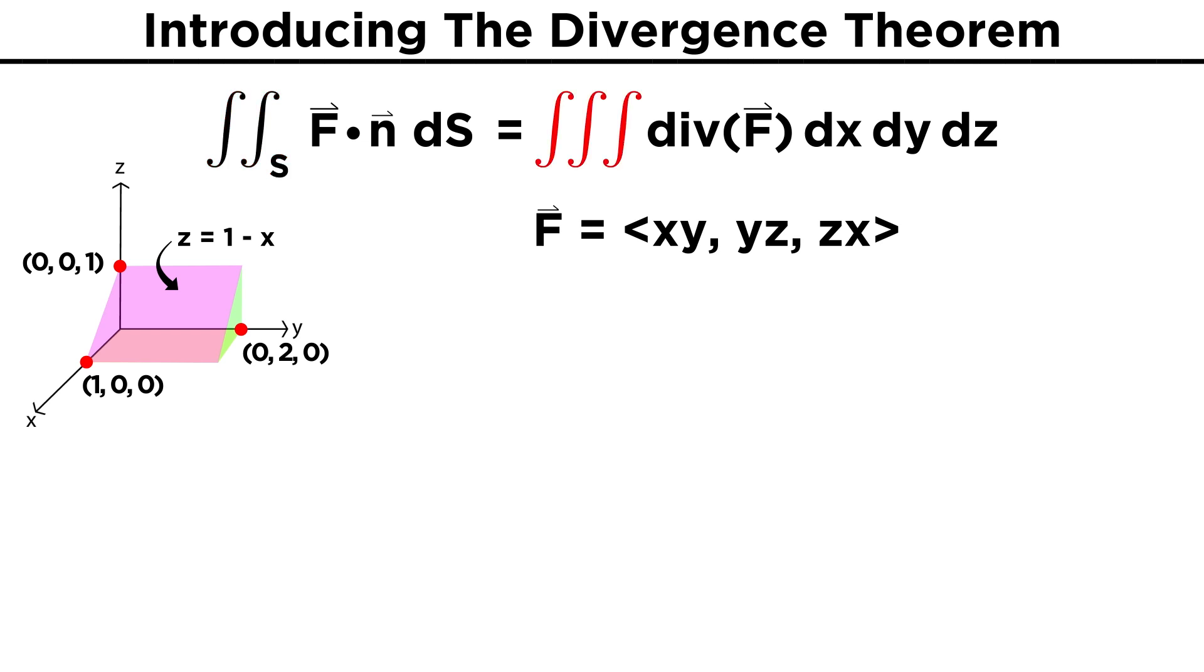Luckily, the divergence theorem reduces our work to one triple integral over the region of the prism. The divergence theorem states that the surface integral will be equal to the triple integral of the divergence of F over the region, so first let's find the divergence of F. Recall that the divergence of a vector field is del dot F, where del equals d dx, d dy, d dz. So for this case, the divergence will be del dot F equals y plus z plus x.